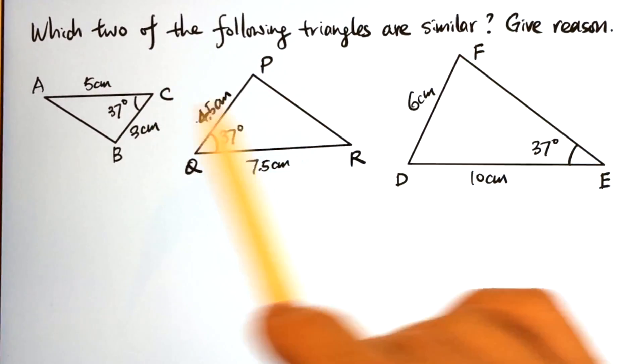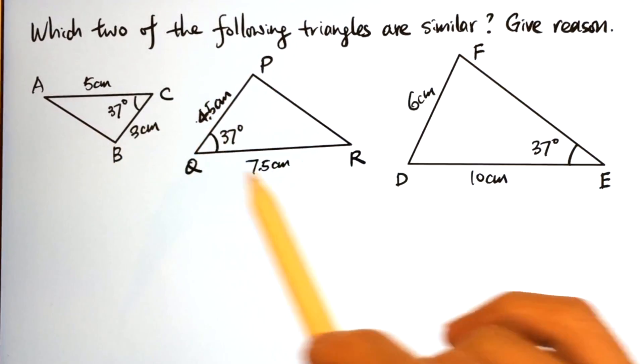Which two of the following triangles are similar? Give reason. Triangle ABC, PQR, and DEF.